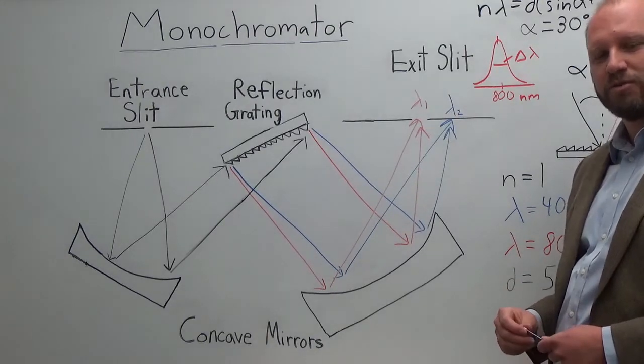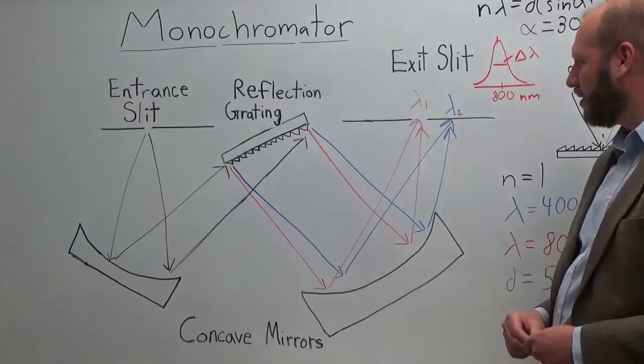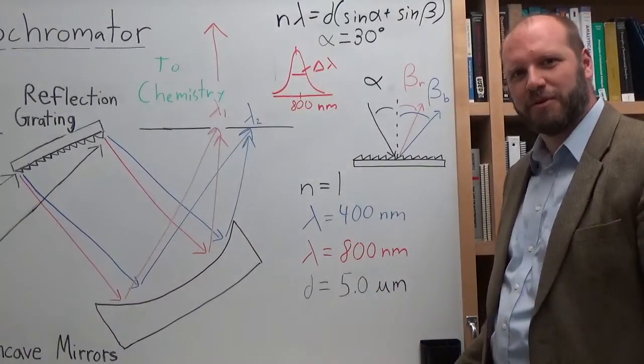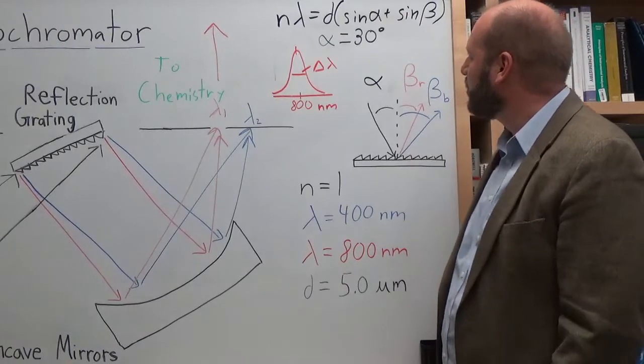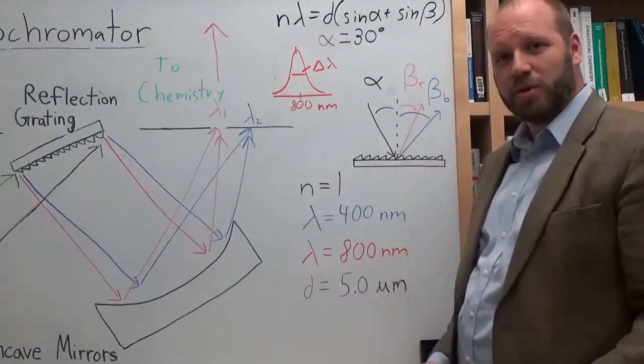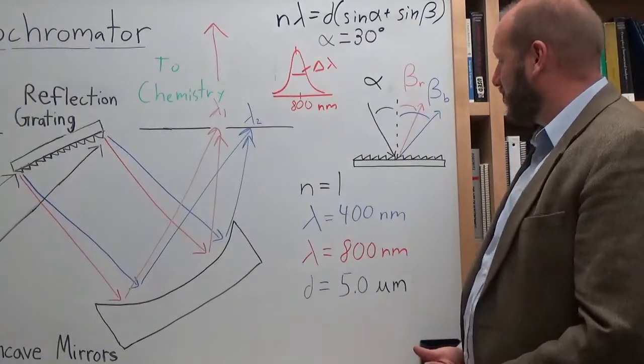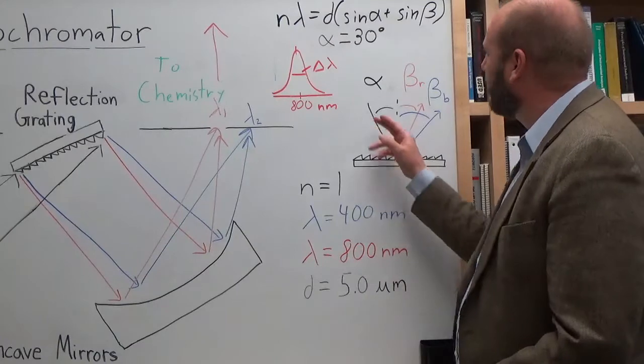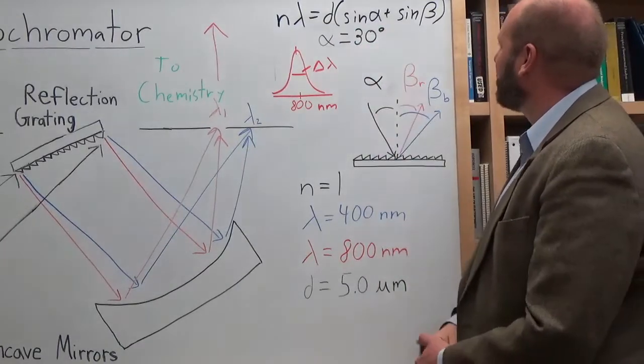I wanted to go over the diffraction grating equation so that you have an appreciation for how diffraction gratings can function. I have the equation up here, and it says that the diffraction order times the wavelength of light equals d, where d is the spacing of my diffraction grating, times the sine alpha plus sine beta.